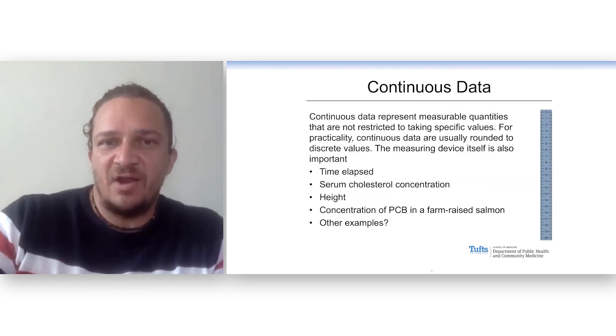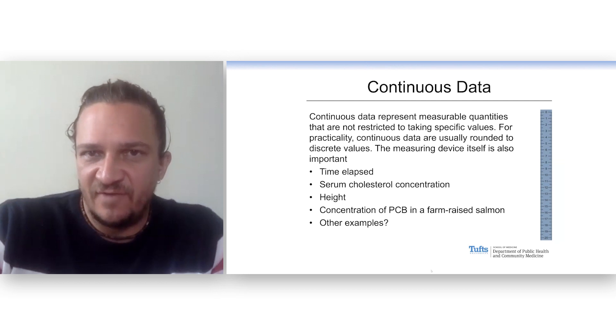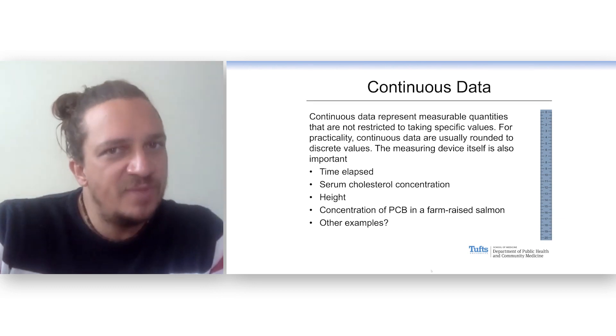Now, richer than discrete are actual continuous variables. A continuous variable you can measure as precisely as the measurement device that you have. If you have two people who say I'm five foot six, they're not actually the same height.